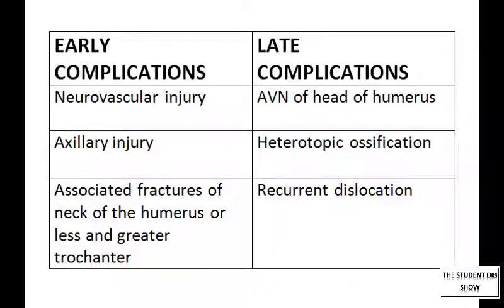There are complications post-reduction. The early complications include neurovascular injury, axillary nerve injury, and associated fractures of the neck of the humerus or the lesser or greater tuberosity. Late complications include avascular necrosis of the head of the humerus, especially if there was delayed reduction, heterotopic ossification and recurrent dislocation.